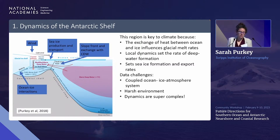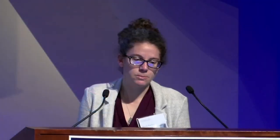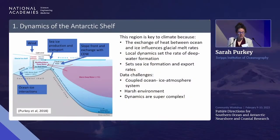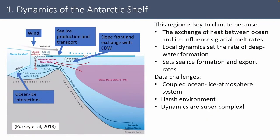Going to the Antarctic shelf, this region is extremely key to climate because it can control the rate of warm deep water getting up onto the shelf and close to the glaciers, thereby driving or decelerating the rate of melting of glacial ice. It also plays a key role in setting the quantity of sea ice and export rates, and in setting the rate of deep water formation. It's a very complicated and coupled system.